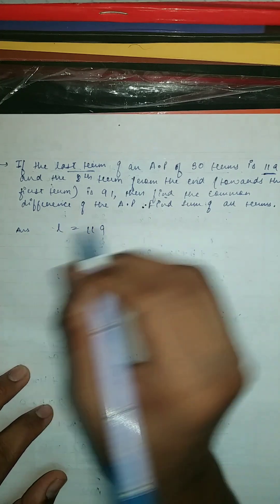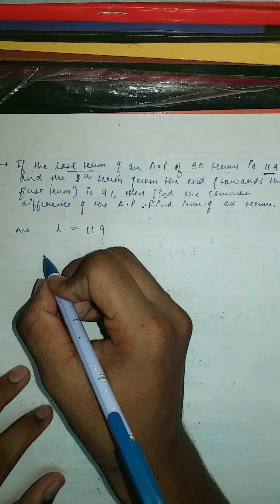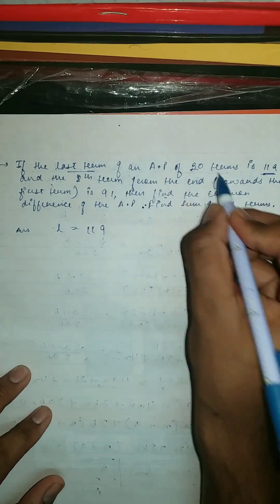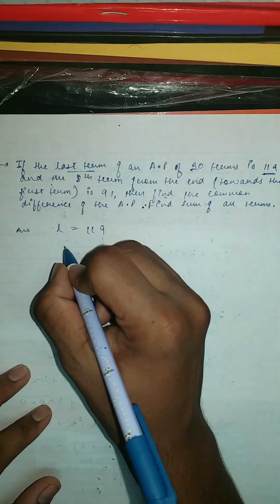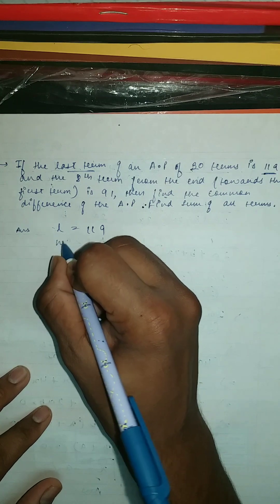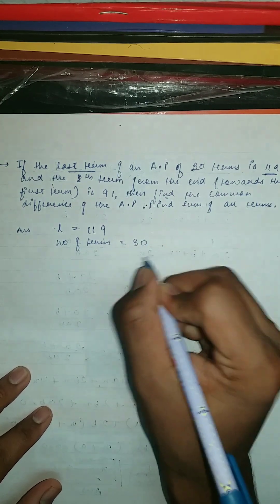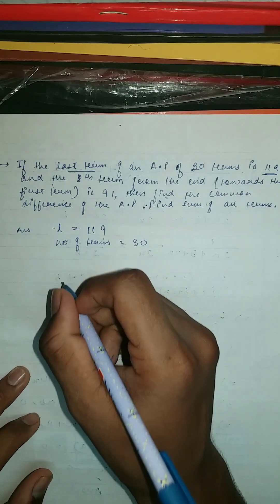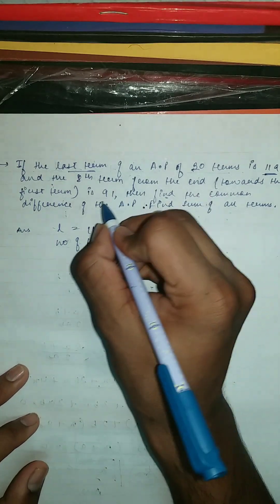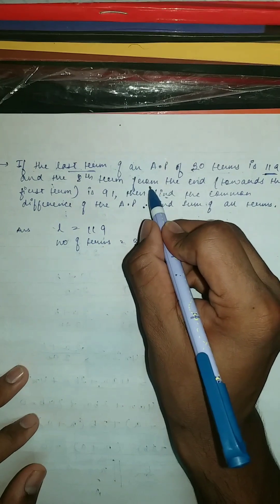And the number of terms in the AP is 30 terms as you can see, so the number of terms is equal to 30. And your 8th term from the end is 91, so 8th term is 91.